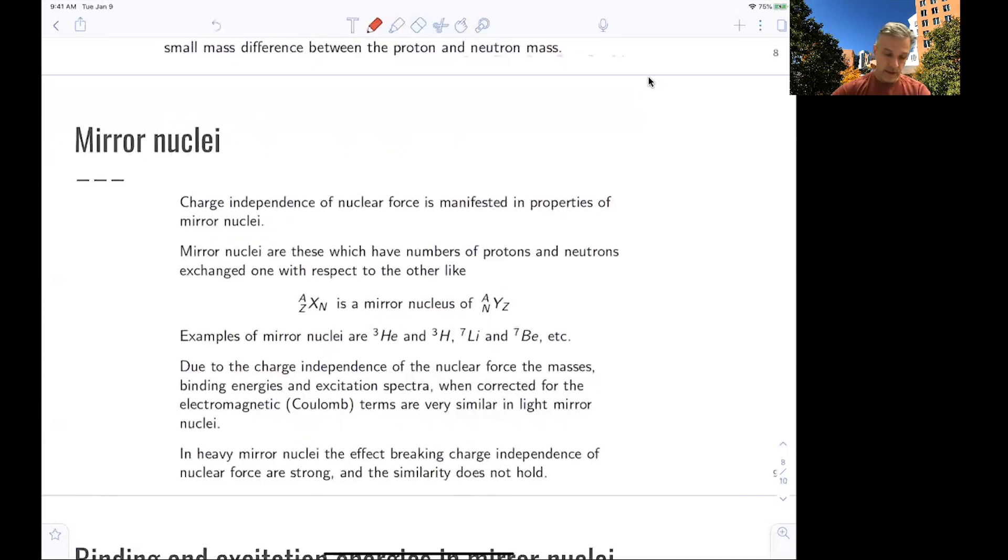What you can, for example, do is study so-called mirror nuclei. Those are the ones where basically you revert the N and the Z for the same A. So they're basically mirrors of themselves in terms of mirroring the protons and the neutrons. Examples are helium-3 and tritium, for example.